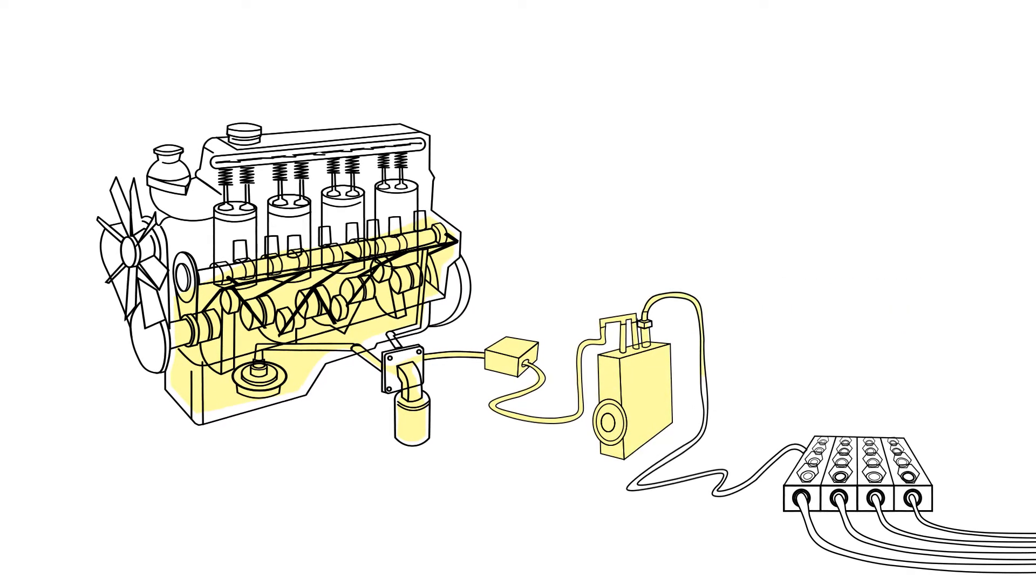After the lubricator pumps, the used oil flows through the fluid divider blocks and to the packing and cylinder lube points.